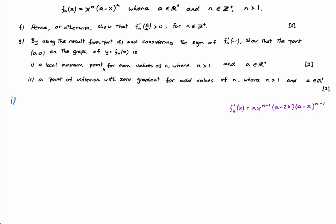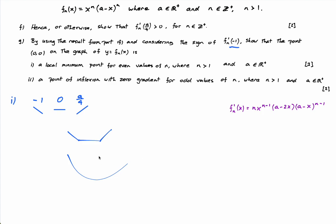We want to show it's a local minimum at zero. At (0,0), the gradient is zero — we know that because f'(0) = 0; if you sub in zero, the whole thing is zero. After zero, say at a/4, the derivative is positive — we have a positive gradient. And before zero, at say x = -1, we want to show there's a negative gradient, because negative → zero → positive means a minimum.